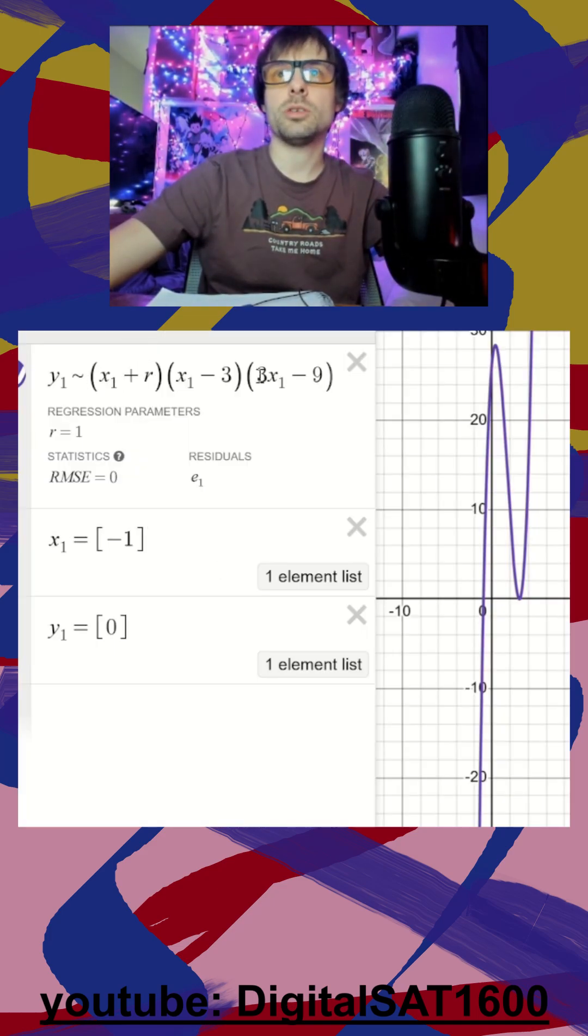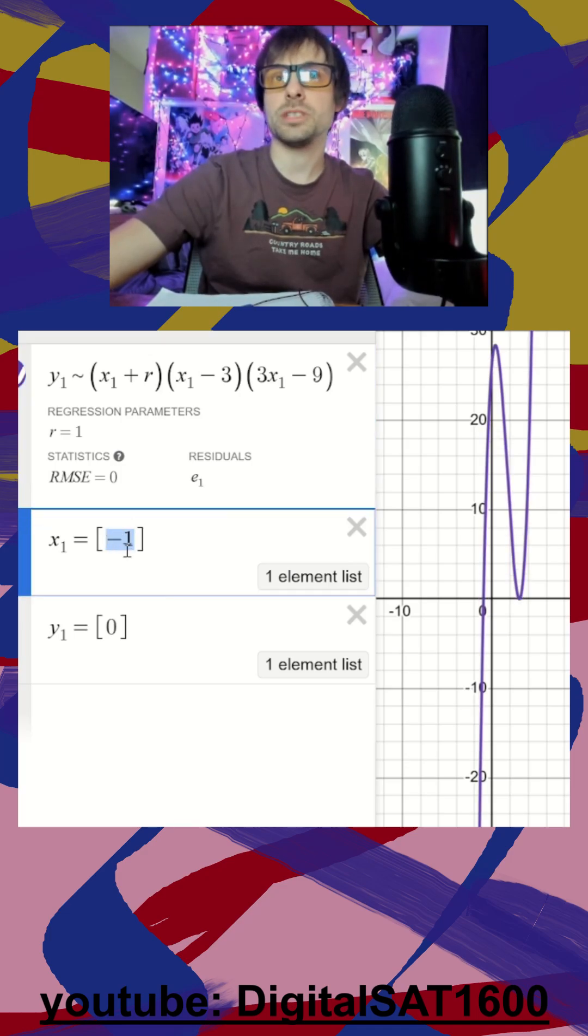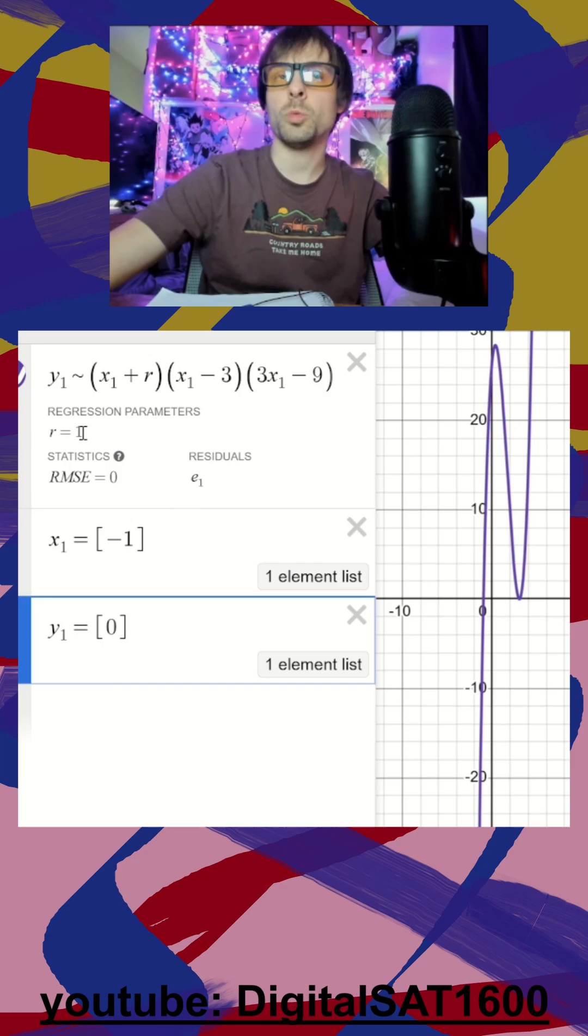So all I did again is I plugged the whole equation in, I replaced my g of x with y one, I replaced my x's with x one, and I replaced my equal sign with a tilde. What it does is it automatically gives me r is equal to one, which it is, if I plug in my point. So I just made sure to say my x was equal to negative one, my y is equal to zero. So that's great. We have r is equal to one.